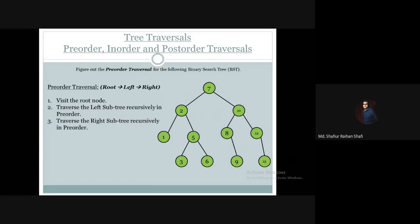Basically, traversal means visiting each element of the tree data structure one by one, and we will print their values. In pre-order traversal, the sequence is: first we visit the root, then we traverse the left subtree recursively in pre-order manner, and lastly we traverse the right subtree recursively in pre-order manner.